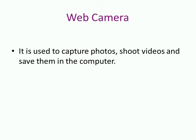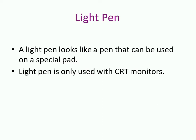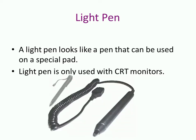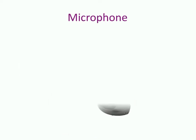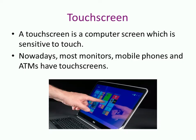A camera is used to capture photos, shoot videos, and save them in the computer. A light pen looks like a pen and can be used on a special screen; it is only used with CRT monitors. A touch screen is a computer screen which is sensitive to touch. Nowadays, most common monitors, mobile phones, and ATMs have touch screens.